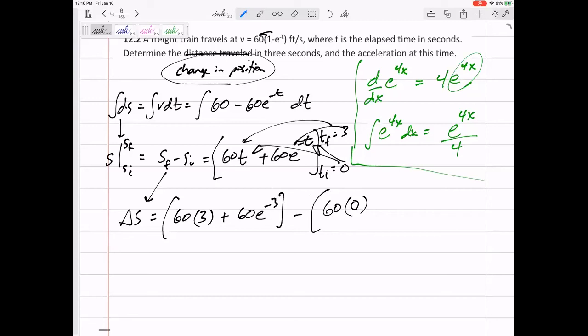Because e to the 0 is not 0. And I don't mean to trick you or anything on the test. But I want you to slow down and do the math. Make sure you're doing it right. So, this would actually be 60 times e to the 0. E to the 0 is 1. All right. Because anything raised to the 0 power is 1.